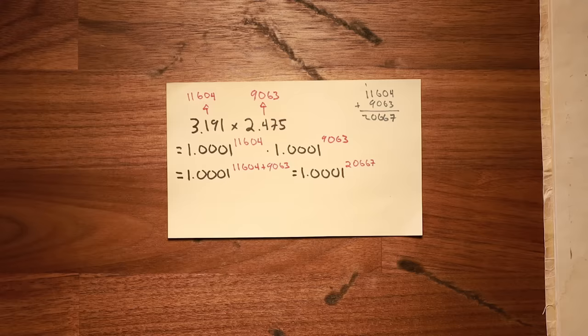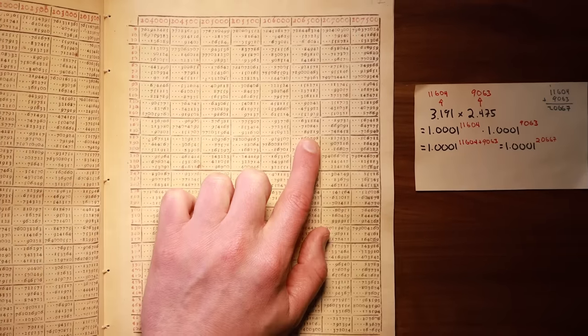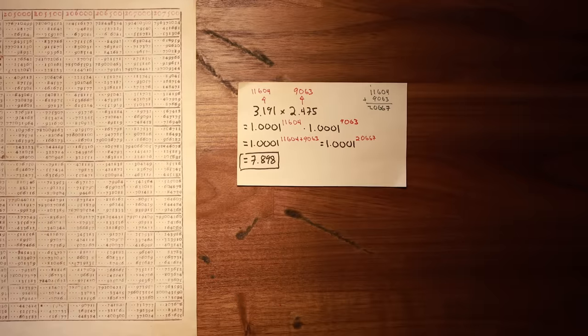To get our final answer, we return to Berge's table and find the black number that corresponds to our new red number, giving us the correct answer to three decimal places, 7.898.